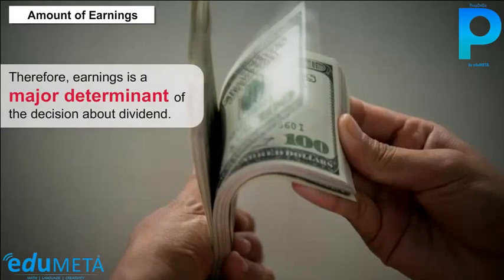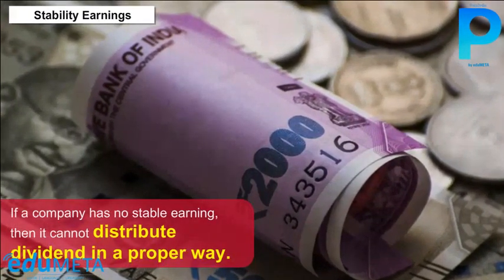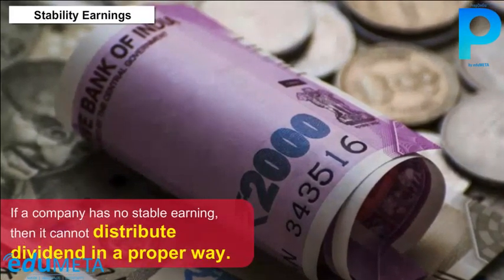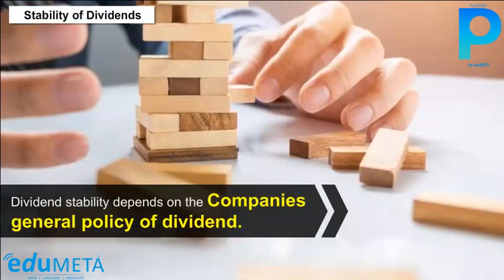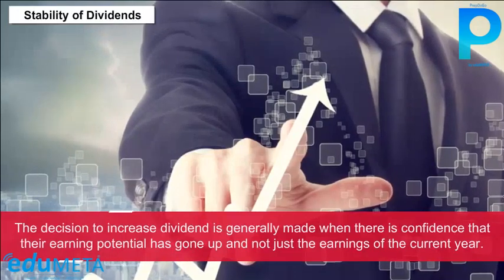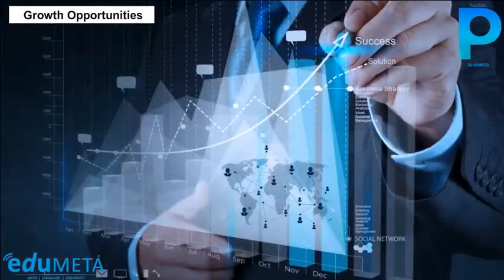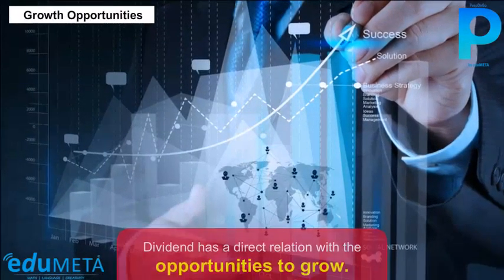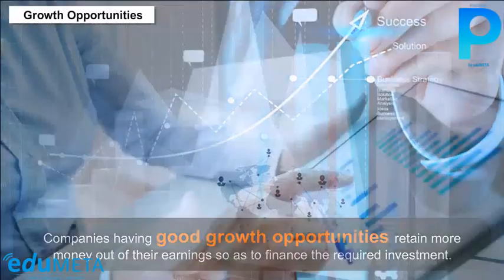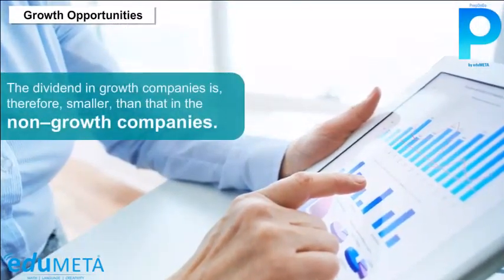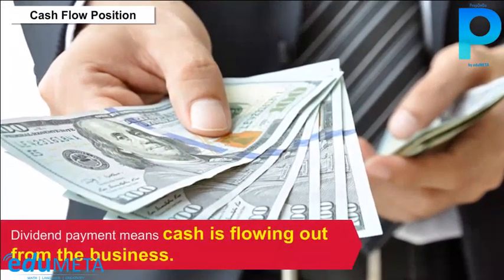Stability of Earnings: If a company has no stable earnings, it cannot distribute dividends properly; stable earnings result in higher dividends. Stability of Dividends depends on the company's general dividend policy — the decision to increase dividends is generally made when there is confidence that earning potential has gone up, not just the earnings of the current year. Growth Opportunities: companies with good growth opportunities retain more earnings to finance required investment, so dividends in growth companies are smaller than in non-growth companies.